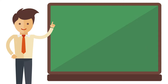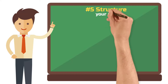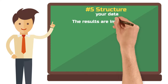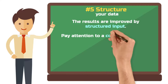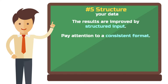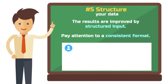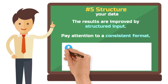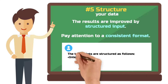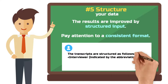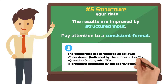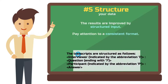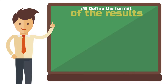Step 5: Structure your data. ChatGPT delivers better results when you structure the transcripts — not just copying and pasting, but making sure the format of question and answer is consistent. Spelling errors or punctuation do not affect ChatGPT's performance. The easiest way to explain the structure is: "The transcripts are structured like this — Interviewer, indicated by the abbreviation I, followed by a question ending with a question mark. Participant is indicated by the abbreviation P, followed by an answer."